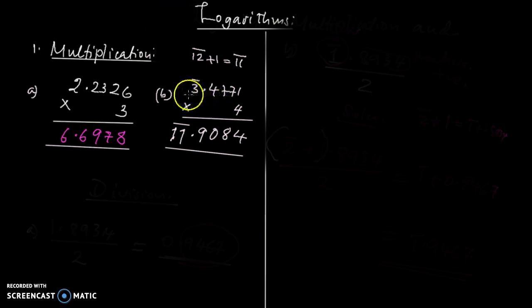Now suppose we have a case where the characteristic is negative. You see here, the characteristic is negative but the mantissa is always positive. The mantissa is always positive, but the characteristic can be negative.